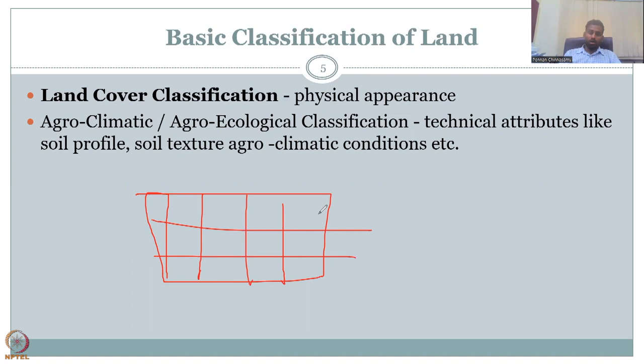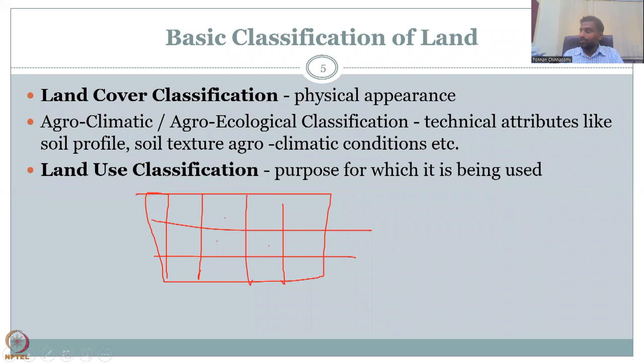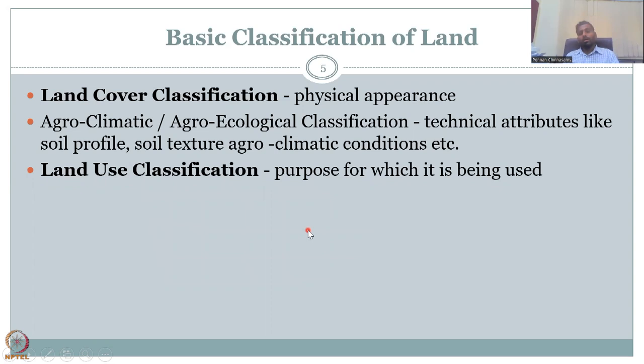You divide the land into grids — say five columns and three rows — then go to each grid and look at the physical appearance. Classification could be agro-climatic or agro-ecological. Agro-climate describes the climate of that grid region and what crop is growing. Agro-ecological classification has more ecological weightage, noting soil profile, soil texture, and agro-climatic conditions. These are part of the classification technique. Land use classification is what the land is being used for.